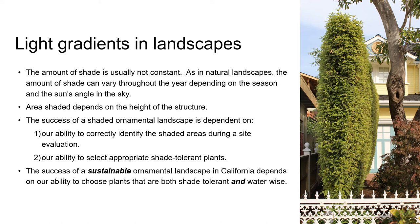Part of creating a successful cultivated landscape — whether it's with ornamental or edible or both types of plants — depends on your ability to identify the sunny and shaded areas during a site evaluation and then to select plants that are appropriate for the different light exposures. In California, where water resources are scarce and unpredictable, the success of a sustainable landscape will also depend on your ability to choose plants that are both tolerant of the light exposure at the planting site and are water-wise.